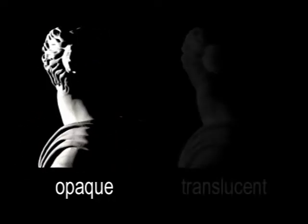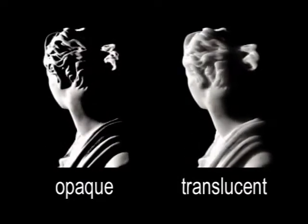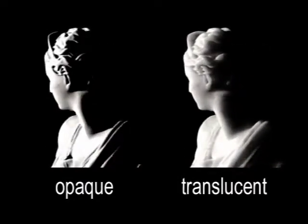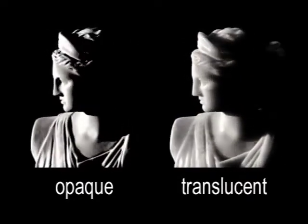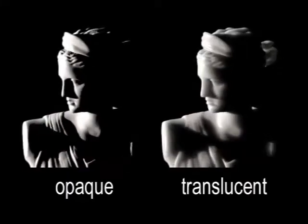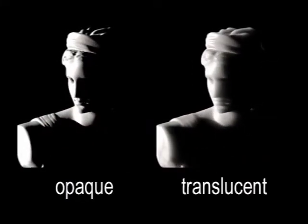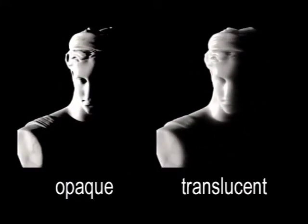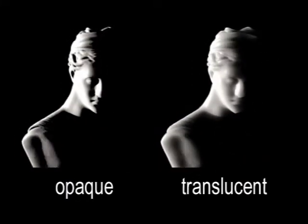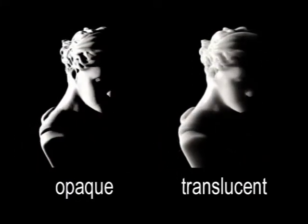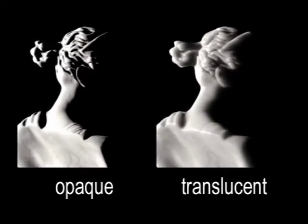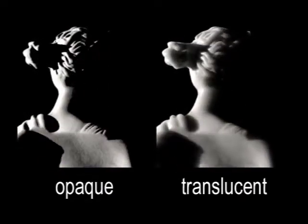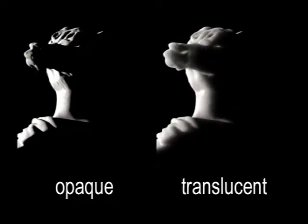In contrast, our model correctly simulates the spread of light through the material, which blends surface features and leads to a smooth appearance. Because light penetrates only so far into the material, translucency lends a sense of scale that an opaque surface model can't.